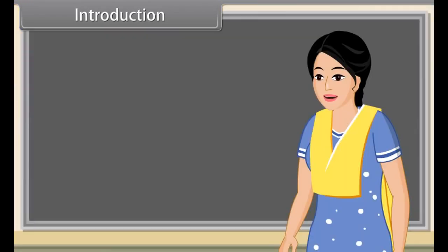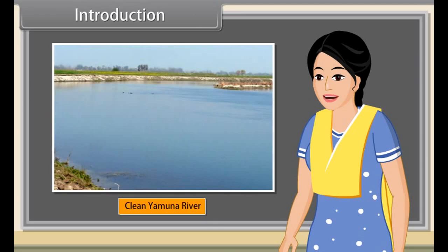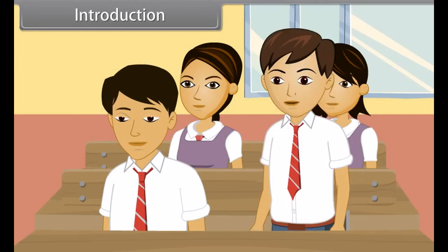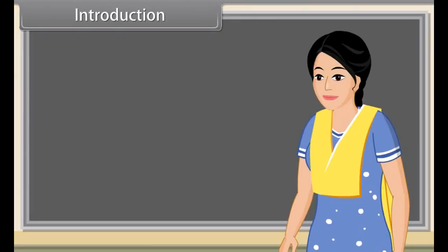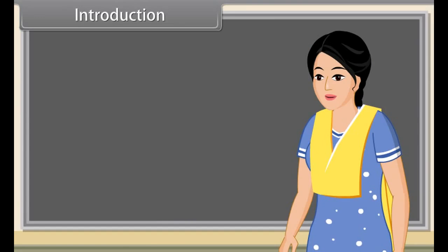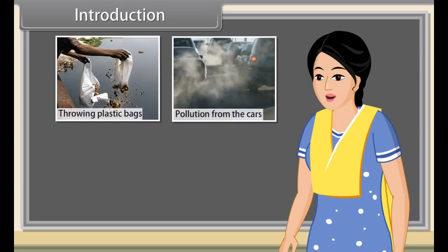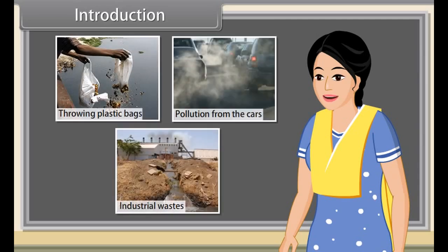Yes, Gaurav, you are absolutely correct. Yamuna River is now one of the most polluted rivers of India. But it was clean before. And now our activities have made it polluted and it appears dirty. How are we making this river polluted? Many of our activities destroy the clean state of rivers, such as throwing plastic bags, pollution from cars, and dumping of industrial wastes. Let us explore them in detail and their effects on our environment.